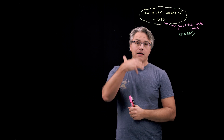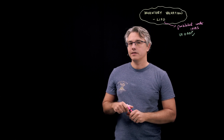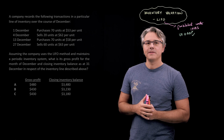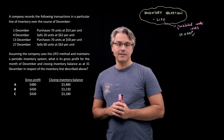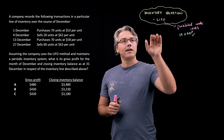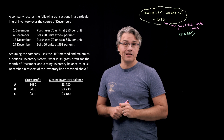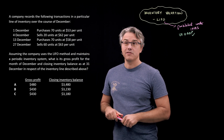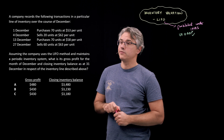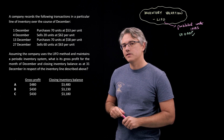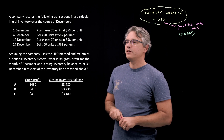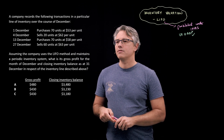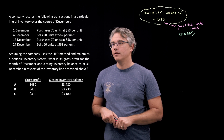In this question we're going to cover how the LIFO assumption is used under a periodic inventory system. If this is something you want to get right in the exam, keep watching. The question is very similar to a previous one covering FIFO — the direct opposite of LIFO — with the same purchases and same sales. Assuming the company uses the LIFO method and maintains a periodic inventory system, what is its gross profit for December and the closing inventory balance as at 31 December?